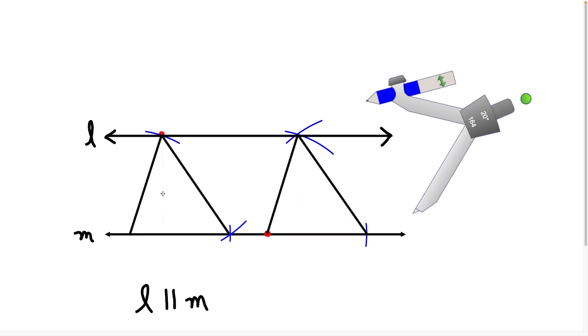So now why did this process work? Well, by copying the triangle from the left over here to the right, what we did was we made an exact copy of this triangle.